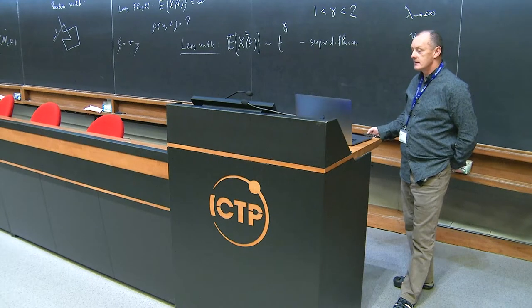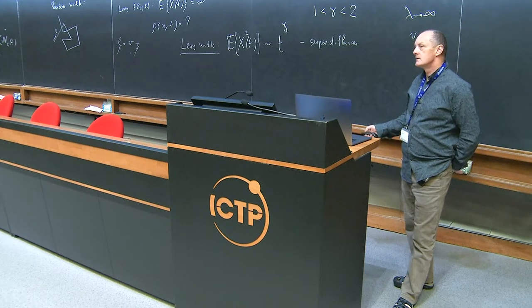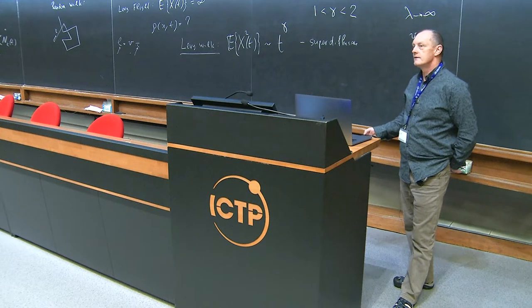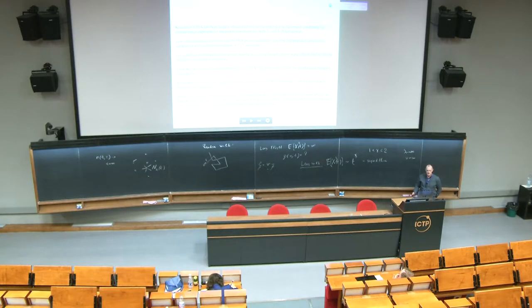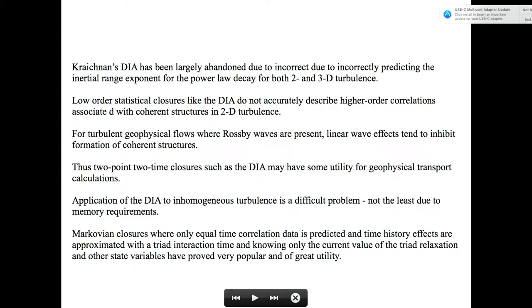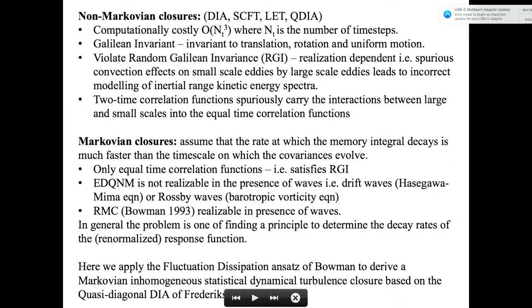Application of the DIA to inhomogeneous turbulence is a difficult problem, partly due to memory requirements. If we're looking at synoptic formation of blocks and other large-scale features in the synoptic atmosphere, it requires about five days of memory to capture the growth of those instabilities. Any two-time closure requires carrying around that kind of memory. Markovian closures use only equal-time correlation data, with time history effects approximated by triad interaction times, knowing only the current value of the triad relaxation time and the other state variables. These have proved very popular, so we're motivated to extend this approach to those problems.